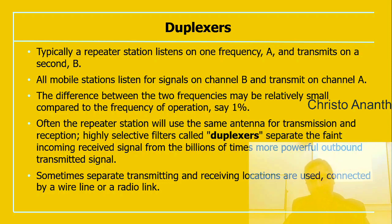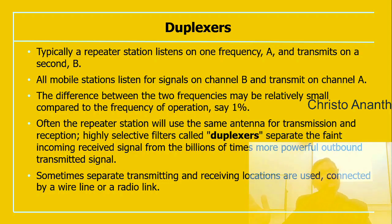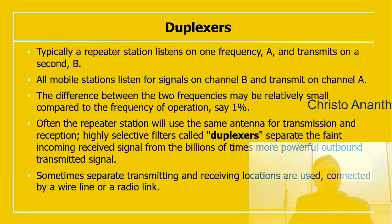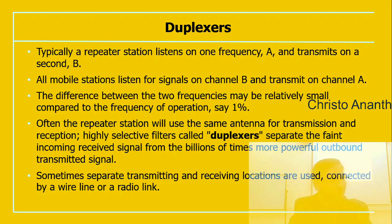A duplexer allows the repeater station to listen on one frequency (A) and transmit on a second frequency (B). All mobile stations listen on channel B and transmit on channel A. The difference between the two frequencies may be small relative to the frequency of operation — about one percent. The repeater station often uses the same antenna for both transmission and reception. Highly selective filters called duplexers separate the faint incoming received signal from the billions-of-times more powerful outbound transmitted signal. Sometimes separate transmitting and receiving locations are used, connected by a wire line or radio link.